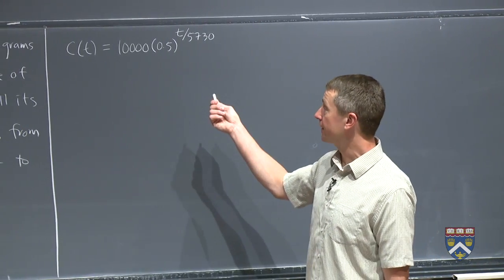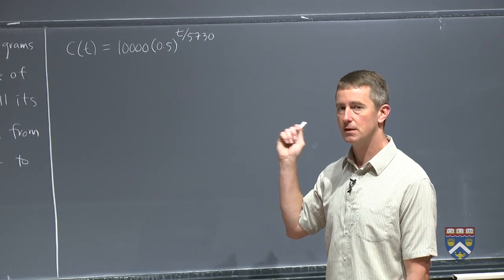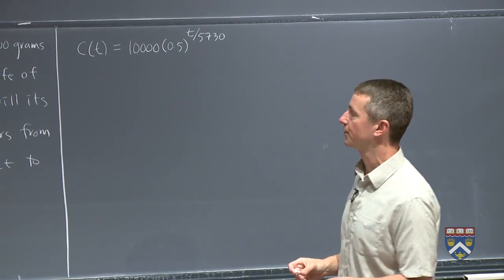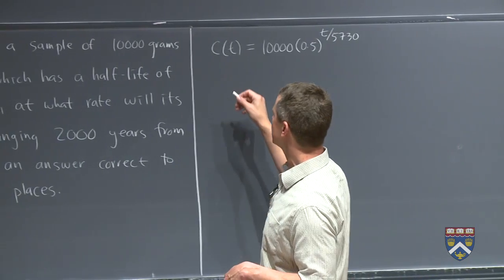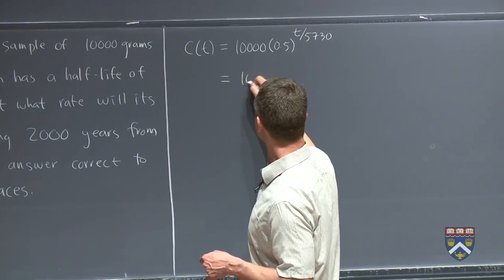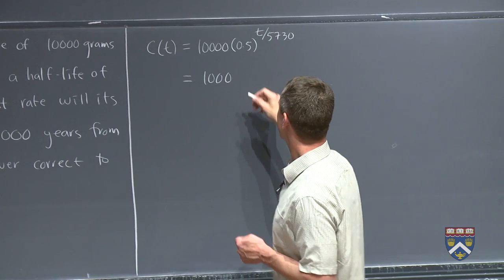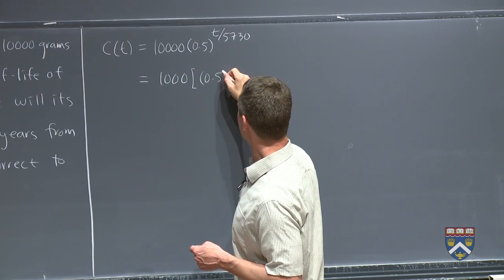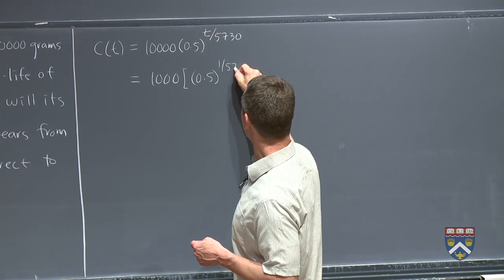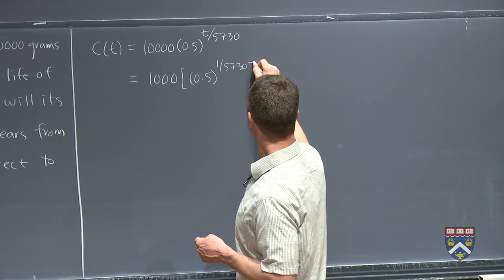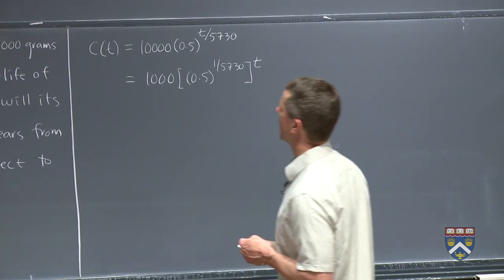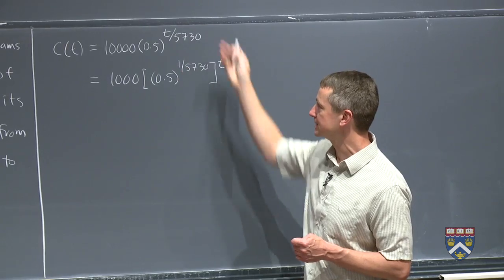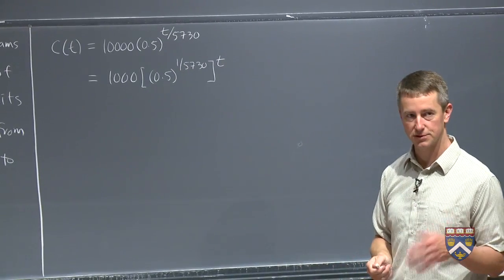Now, can we take the derivative the way this is written? Not quite, right? Because we want to have just a t in the exponent, not t over 5730. So just as we did in those last two examples, we're going to have to first rewrite this as just something to the t. So I can write it as 0.5 to the (1 over 5730), all raised to the t-th power. Because our third exponent rule says that I would multiply this t in and get t over 5730, which is just what we're supposed to get.